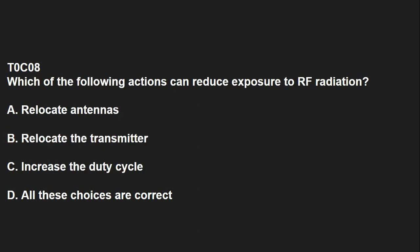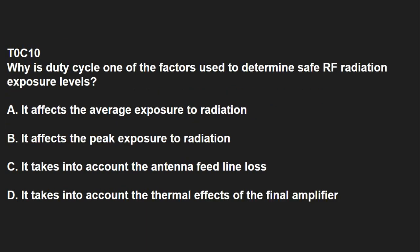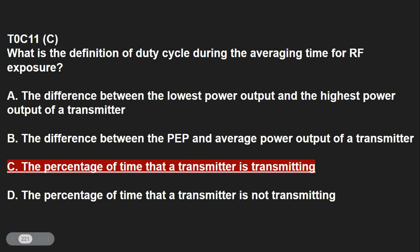T0C08: Which of the following actions can reduce exposure to RF radiation? Relocating antennas. T0C09: How can you make sure your station stays in compliance with RF safety regulations? By re-evaluating the station whenever an item in the transmitter or antenna system is changed. T0C10: Why is duty cycle one of the factors used to determine safe RF exposure levels? It affects the average exposure to radiation. T0C11: What is the definition of duty cycle during the averaging time for RF exposure? The percentage of time that the transmitter is transmitting.